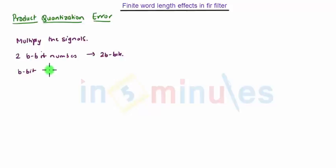Therefore it is necessary to quantize the product. The error due to quantization of the output of the multiplier is called as product quantization error.